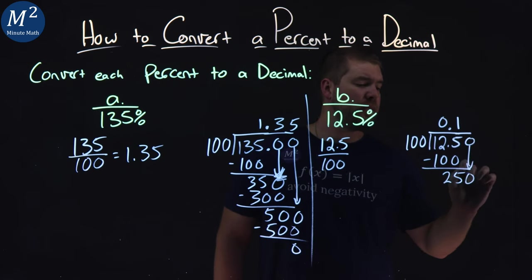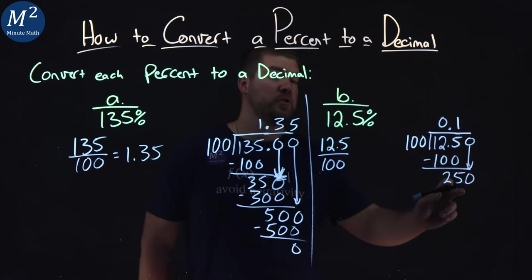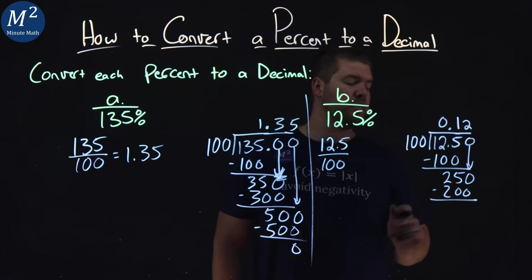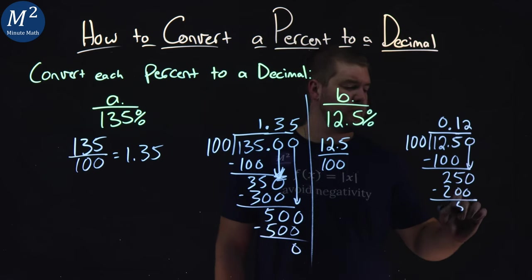Add a 0, bring it down. 100 goes into 250, 2 times. 2 times 100 is 200. Subtract the two, 250 minus 200 is 50.